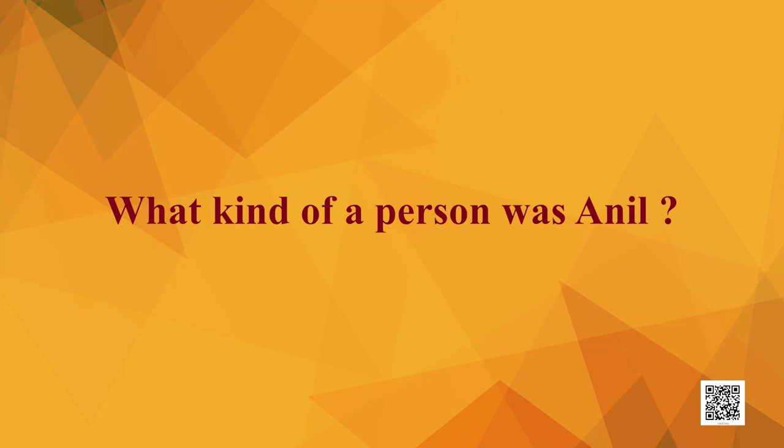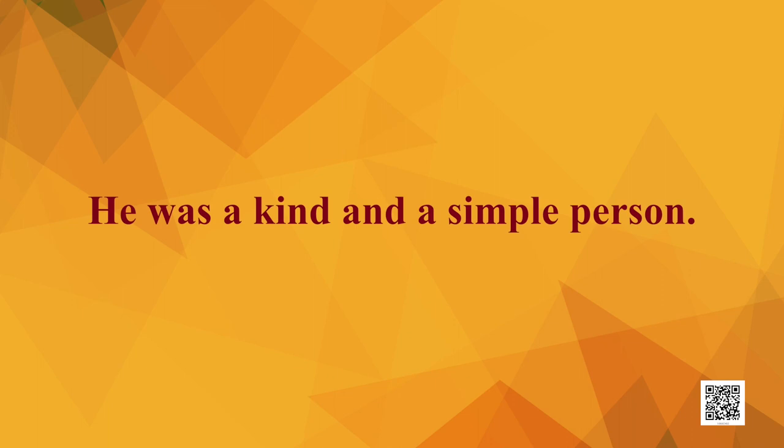Finally, Hari Singh has been able to reach Anil's house. He is employed there as a cook, but he does not know how to cook a meal. Anil is very kind — he tells him he will teach him how to cook. What kind of a person was Anil? Anil was kind and simple.